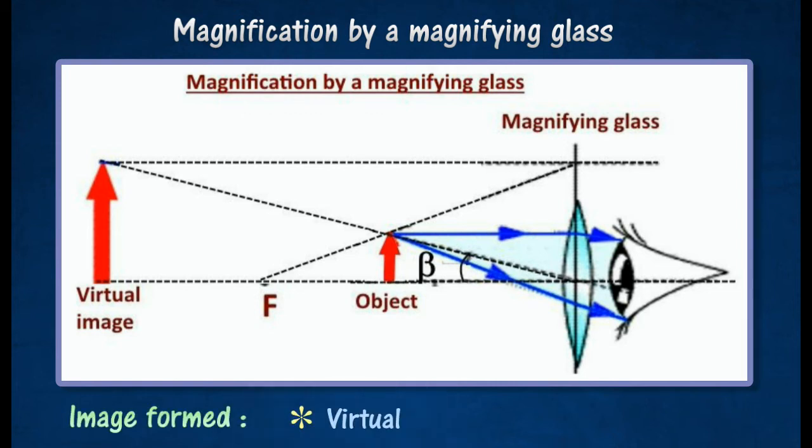The image formed is virtual, upright, magnified, and it is formed at a distance of 25 cm from the lens.